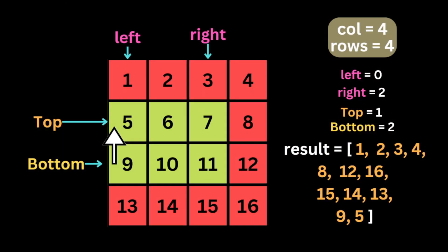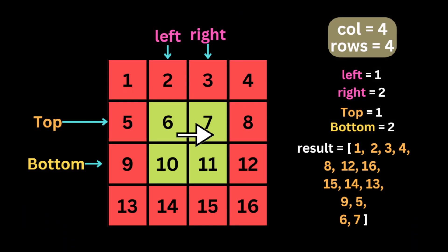After all the numbers are pushed to the result array, we eliminate the last row by moving the bottom pointer to the previous row. Then we check if left and right have not met each other, visit the leftmost column from bottom to top, and move the left pointer to point to the second column.